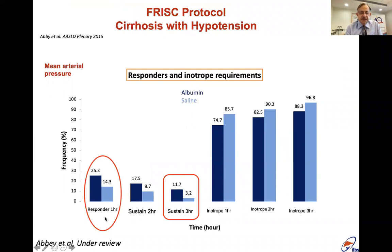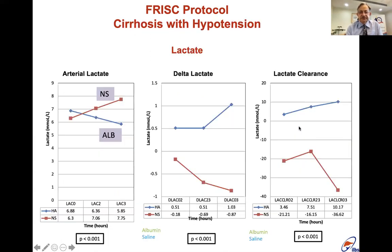At one hour, mean arterial pressure was significantly better in the albumin group compared to the saline group, and this was sustained at three hours. Inotrope requirement was lower in those who received 5 percent albumin. Lactate clearance was superior with 5 percent albumin, and delta lactate was also better in the albumin group.